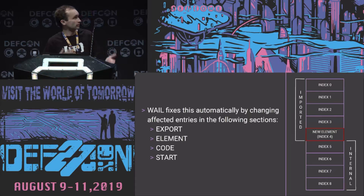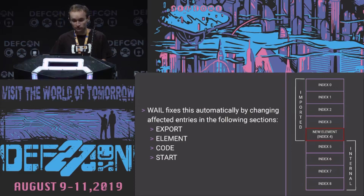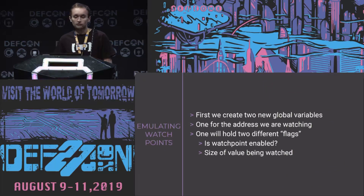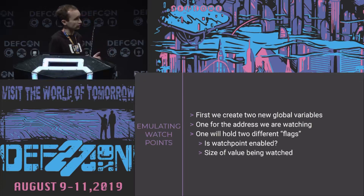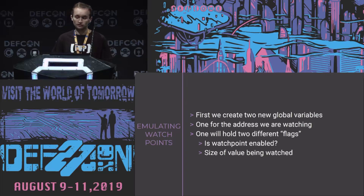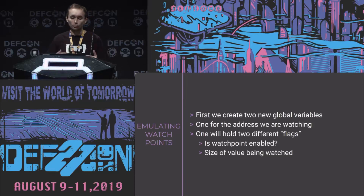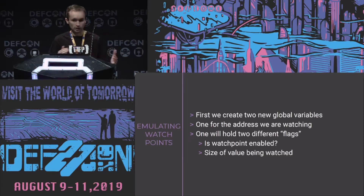Now that we've talked about the boring stuff and we have our parsing tool, we can go back to our goal of emulating the behavior of watchpoints using WAIL. The first thing we're going to do is create two new global variables within the binary. The first will hold the address we're watching — literally the address of our watchpoint. The second will hold two flags: first, is this watchpoint enabled; and second, how big of a value are we watching — one byte, two, four, eight, whatever.